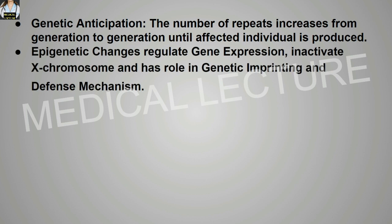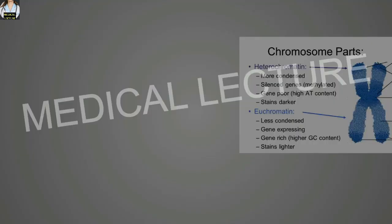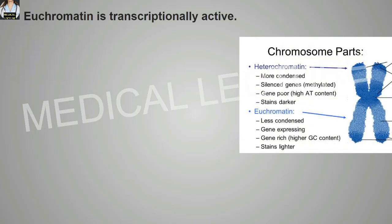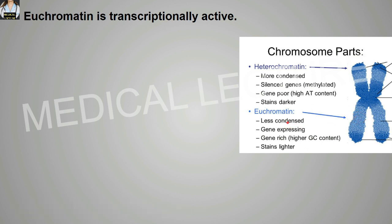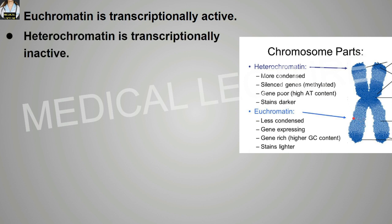Epigenetic changes regulate gene expression. They basically inactivate the X chromosome and have a role in genetic imprinting and defense mechanisms. Euchromatin is transcriptionally active and less condensed, while heterochromatin is transcriptionally inactive and more condensed.